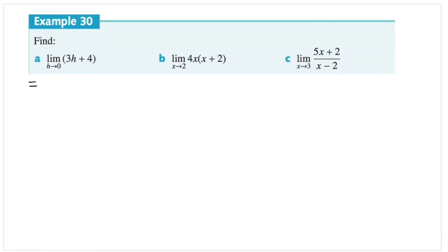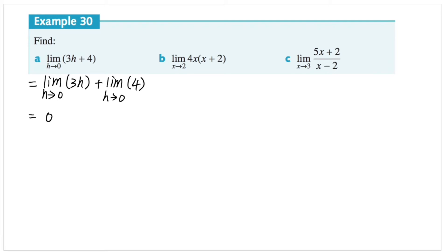In the first question, we want to find the limit of 3h plus 4 as h approaches 0. We find them separately: the limit of 3h as h approaches 0 gives 3 times 0, which is 0; and the limit of the constant 4 as h approaches 0 stays 4. Therefore, the answer is 4. The limit of 3h plus 4 as h approaches 0 is 4.